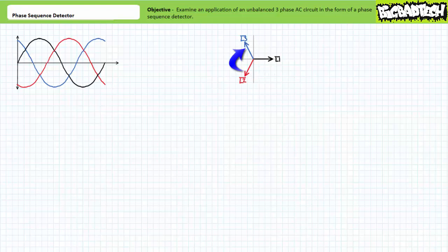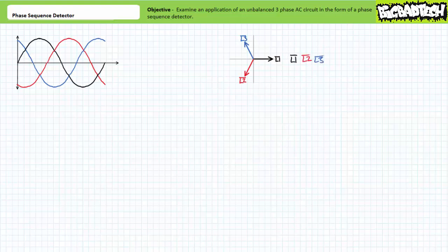Similarly, it can be said that L3 lags L2 by 120 degrees just as easily as L2 leads L3 by 120 degrees. It can also be said that L1 lags L3 by 120 degrees just as easily as L3 leads L1 by 120 degrees. In summary, each waveform exhibits a relative phase shift of 120 degrees with respect to the other waveforms. Given L1 is established as our frame of reference, we can state L1 peaks, then L2, then L3.